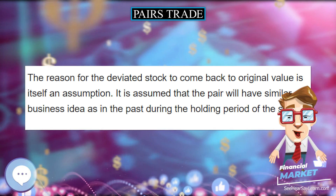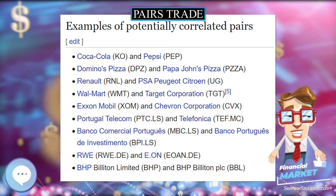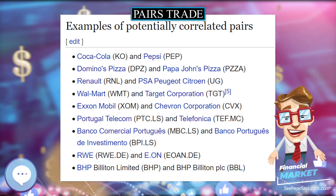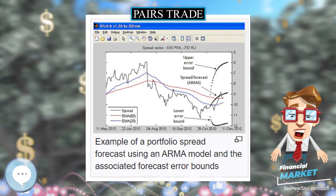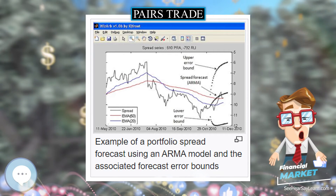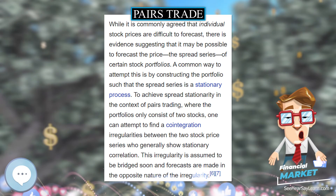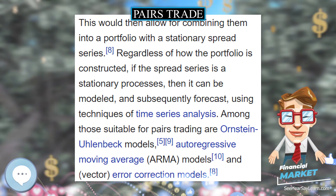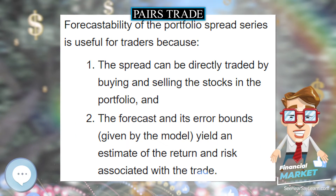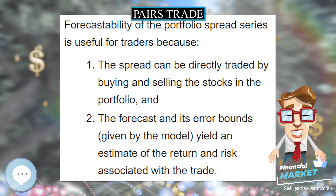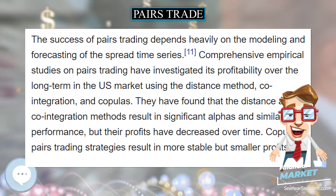Algorithmic pairs trading. Today, pairs trading is often conducted using algorithmic trading strategies on an execution management system. These strategies are typically built around models that define the spread based on historical data mining and analysis. The algorithm monitors for deviations in price, automatically buying and selling to capitalize on market inefficiencies. The advantage in terms of reaction time allows traders to take advantage of tighter spreads.